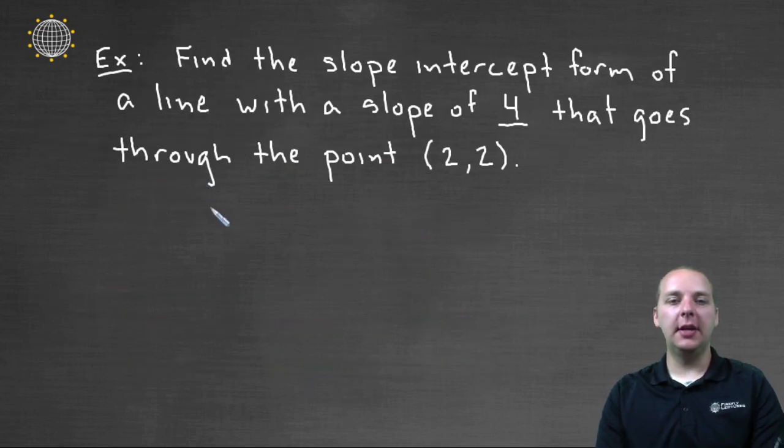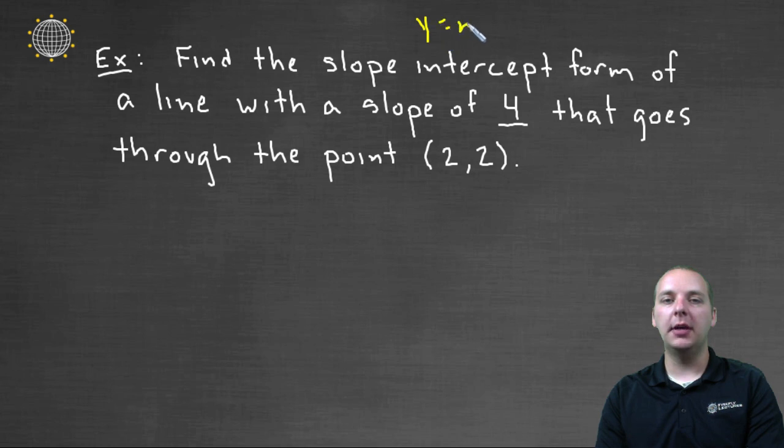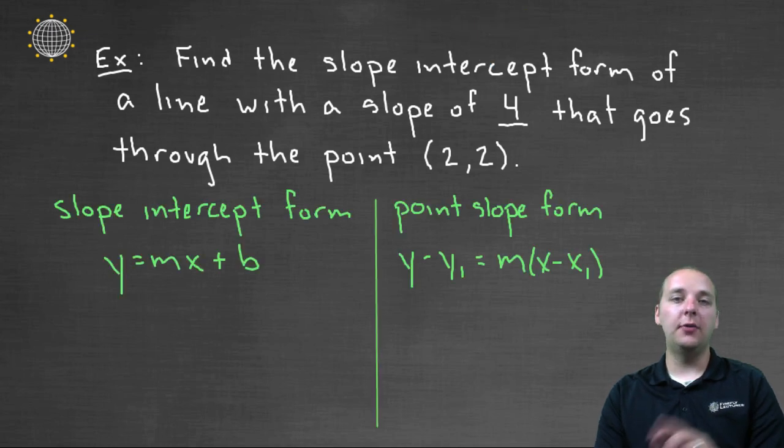So let's try an example here, let's see how this works. Here they ask us to find the slope-intercept form of a line—slope-intercept form is y equals mx plus b, you recall—of a line that has a slope of four that goes through the random point (2, 2), which by the way is not on the y-axis. So slope-intercept form to me doesn't sound like the best place to start. Now with that being said, we have two options and really it's your choice.